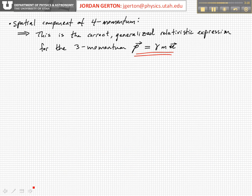So the spatial component of the four momentum is just the correct, generalized, relativistic expression for the momentum in three-dimensional space, the three momentum. And so it's given by p, little p. I've tried to show this p in a lowercase subscript notation to sort of set it aside to make it different from the four momentum.